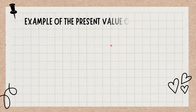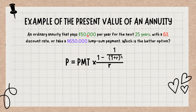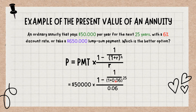Assume a person has the opportunity to receive an ordinary annuity that pays $50,000 per year for the next 25 years with a 6% discount rate, or take a $650,000 lump sum payment. Which is the better option? Using the above formula, the present value of the annuity is: P equals $50,000 multiplied by 1 minus 1 divided by 1 plus 0.06 to the power 25, divided by 0.06, which equals $639,168. Given this information, the annuity is worth $10,832 less on a time-adjusted basis, so the person would come out ahead by choosing the lump sum payment over the annuity.